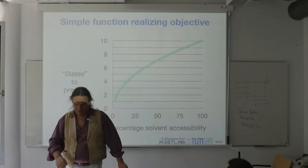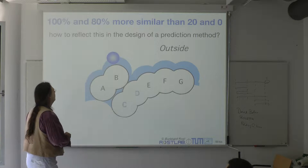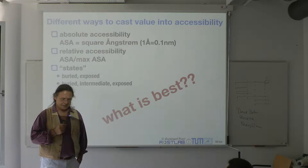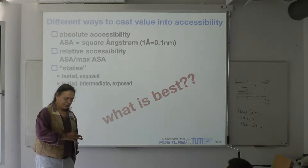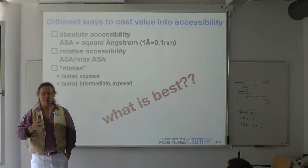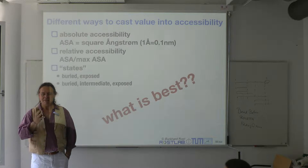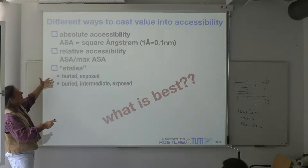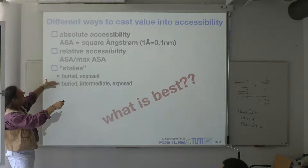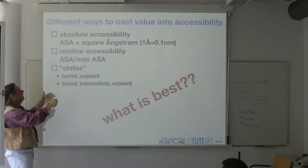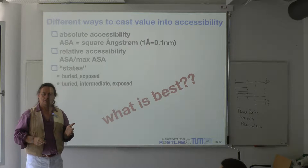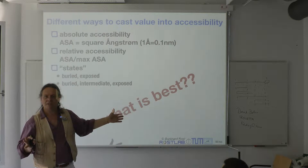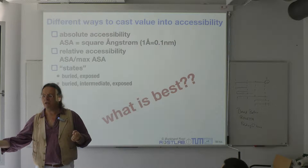We can classify into different states. I have three different ways of measuring solvent accessibility: square angstrom, percentage, and states. I want to predict solvent accessibility, and the question is which one should I use to train a machine learning device?